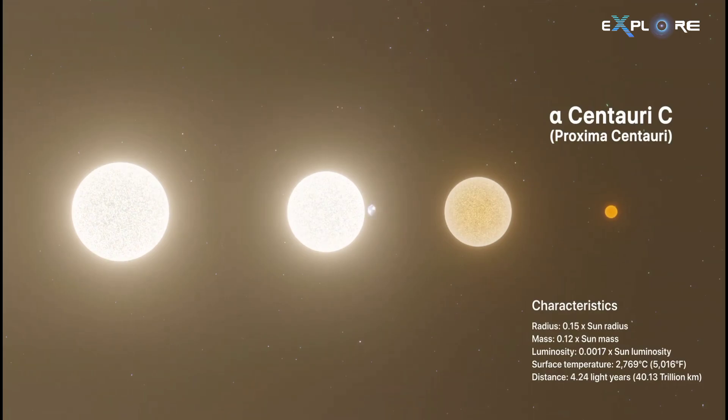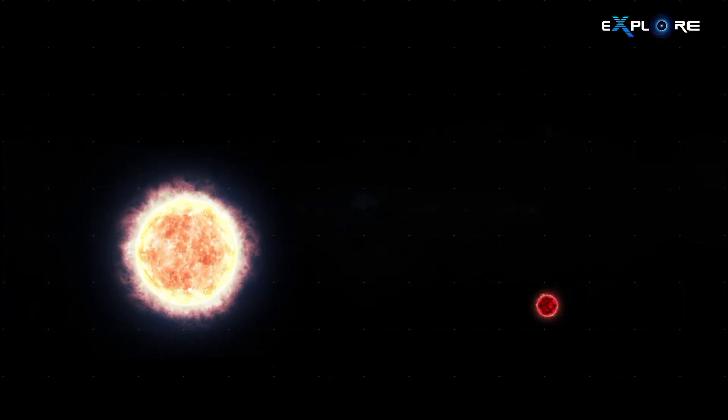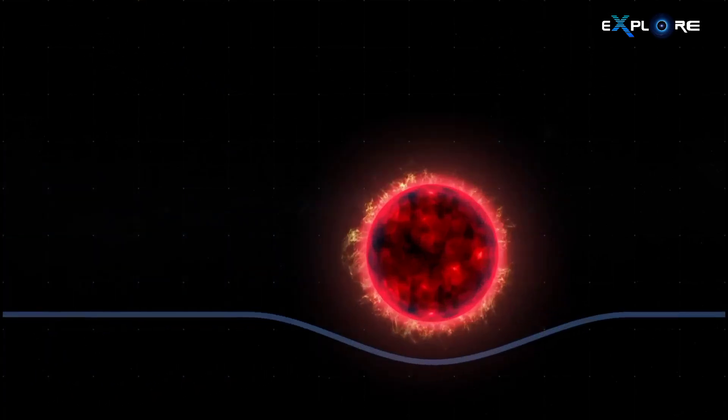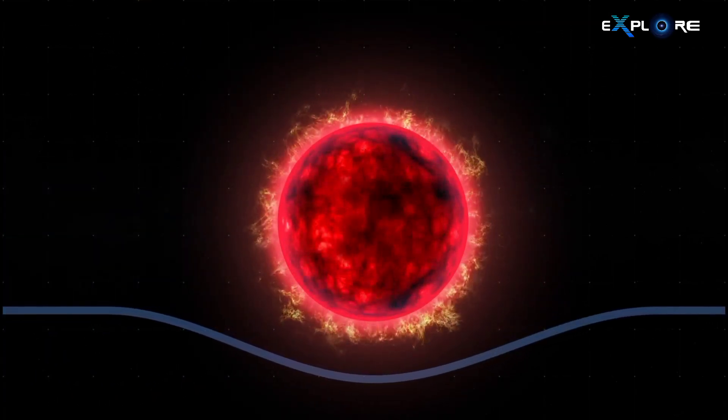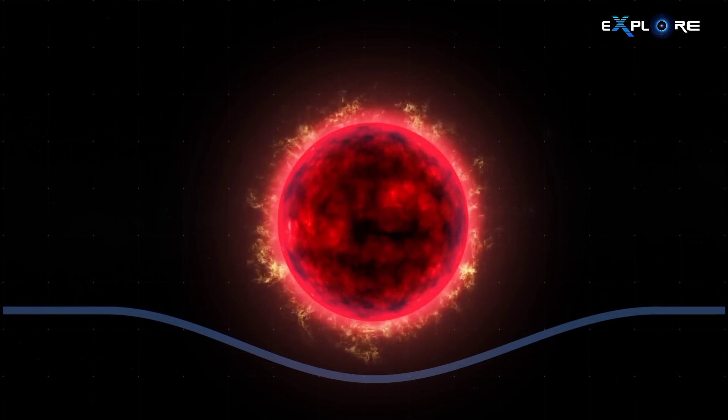Now, meet Proxima Centauri, the smallest of the three stars. It's different from its companions because it's a red dwarf. It's tiny compared to our sun, both in mass, which is just 12% of the sun's mass, and a correspondingly smaller radius. Its surface temperature is notably lower than that of our sun.